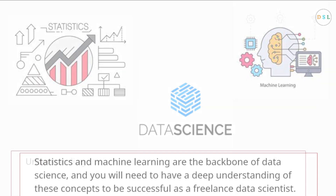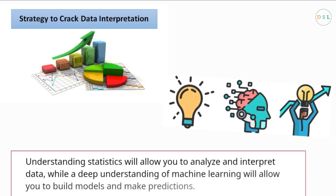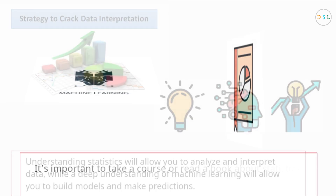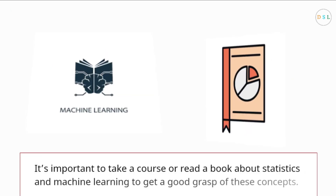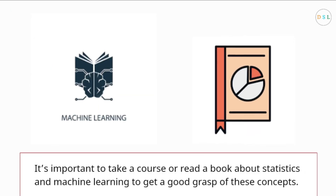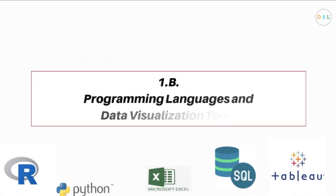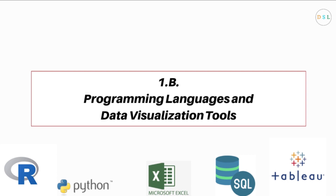1a: Understanding statistics and machine learning. Statistics and machine learning are the backbone of data science, and you will need a deep understanding of these concepts to be successful as a freelance data scientist. Understanding statistics will allow you to analyze and interpret data, while a deep understanding of machine learning will allow you to build models and make predictions. It's important to take a course or read a book about statistics and machine learning to get a good grasp of these concepts.